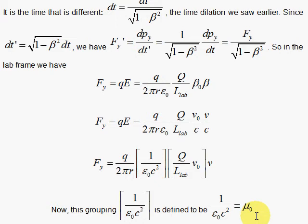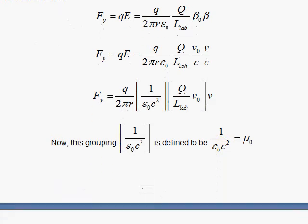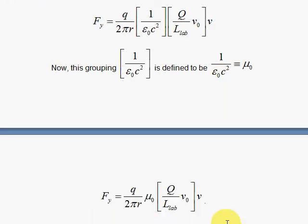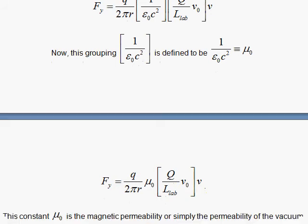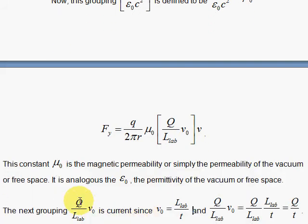You're almost finished when you get this far. It's a matter of looking at what is this grouping here, the charge over the laboratory spacing of the charges times V naught. When you do that, you will find you will get a nice little cancellation here.